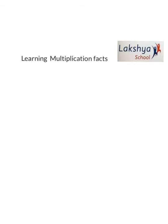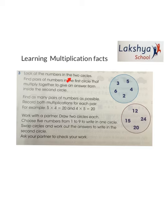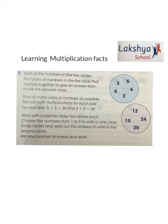Question 3: Look at the numbers in two circles. Find pairs of numbers in the first circle that multiply together to give an answer from the second circle. Find as many pairs of numbers as possible and record both multiplications for each pair. Example: five fours are 20, which is in the second circle; or four fives are 20, which is also in the second circle.